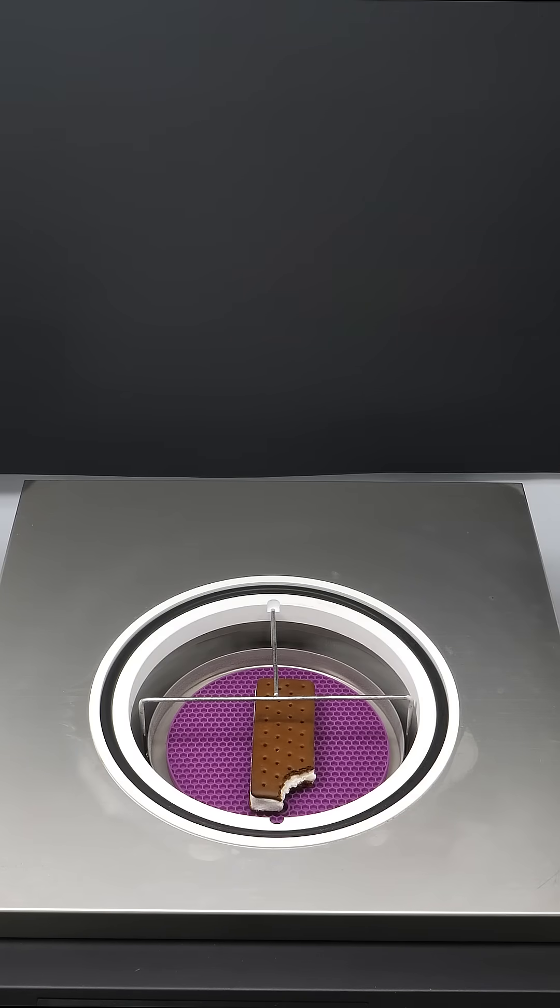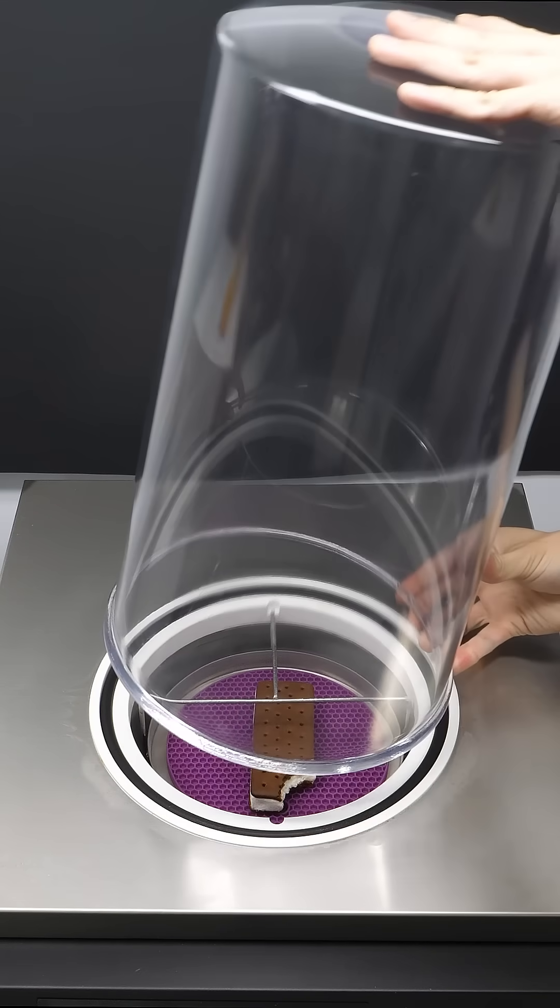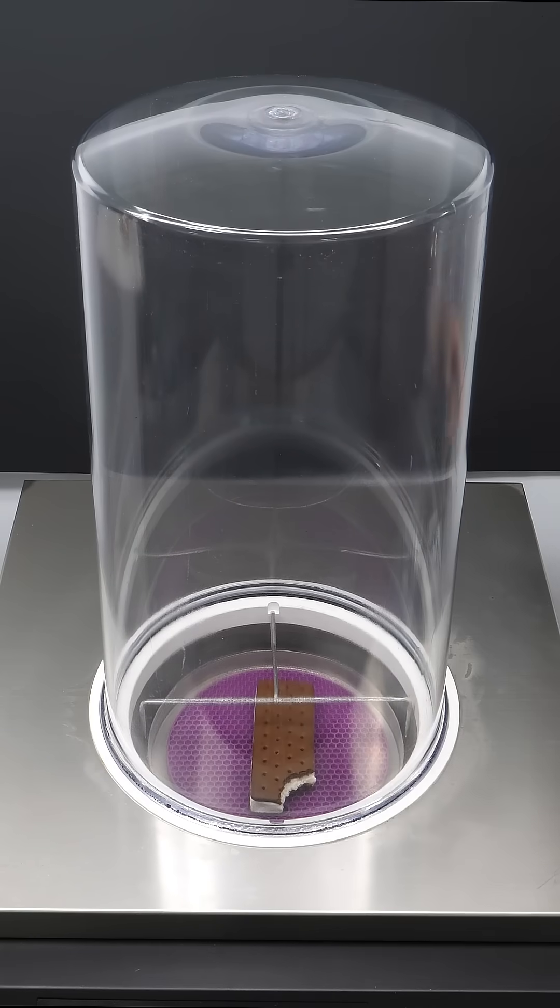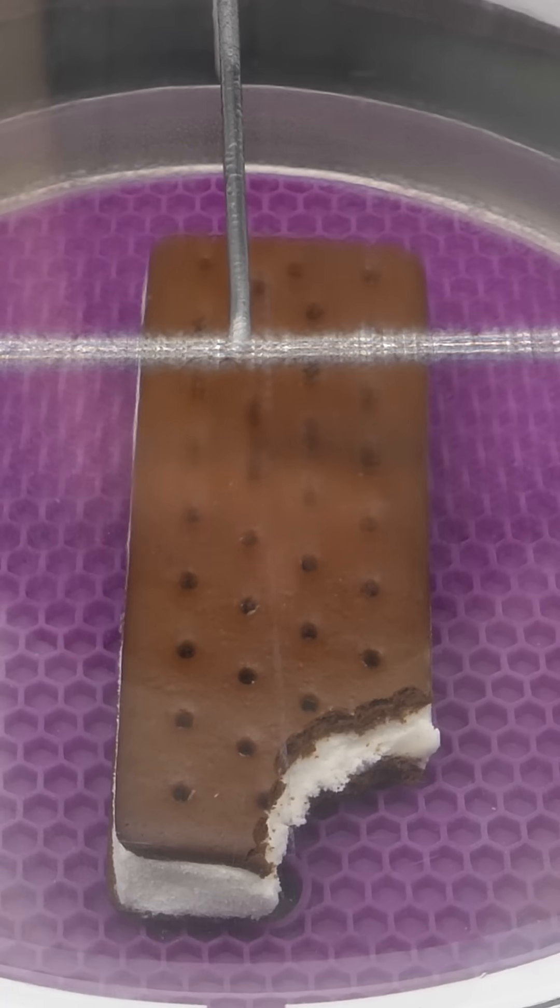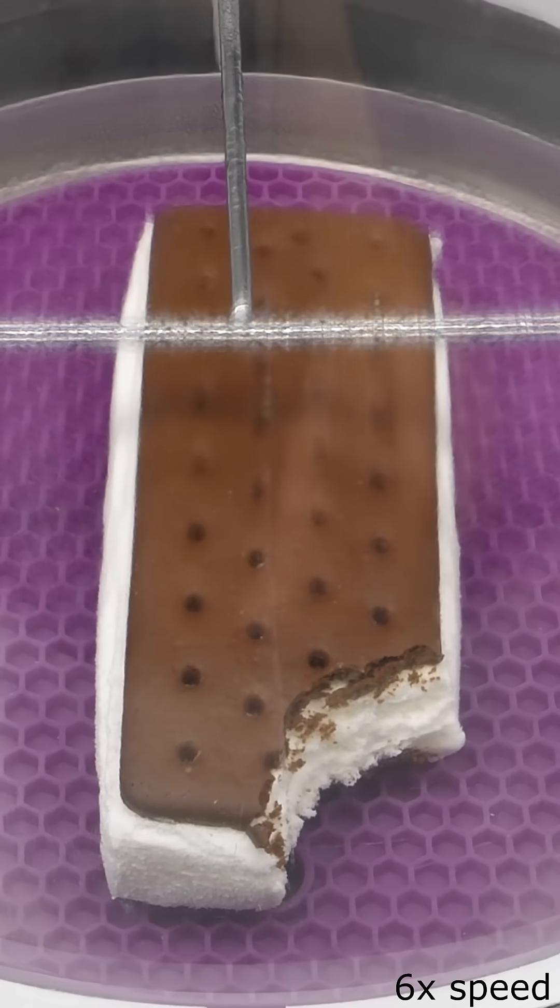By now, it should be nice and cold, and the next step is to cover it with this giant plastic dome thing. With this in place, I can turn on my vacuum pump, and I'll pull out all the air.